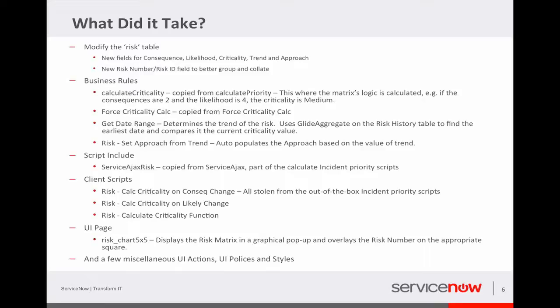There was a script include involved—again, it was stolen from the calculate priority, it's called ServiceAjax risk in my world. And there were a couple client scripts, all of which were stolen. The UI page is the pop-up that we saw, so I'm gonna pop over to that code in the instance.